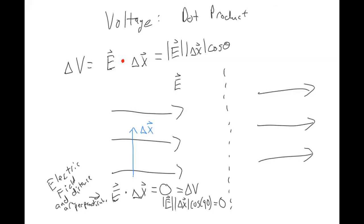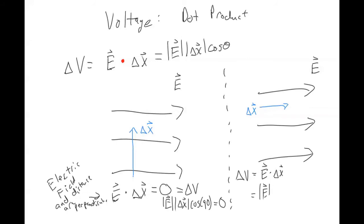Now for the other example, where the electric field and delta x are in the same direction: the change in voltage equals E dot delta x, which is magnitude of E times magnitude of delta x times cosine of zero. Cosine of zero equals one, so multiplying by one just leaves you with delta V equals electric field times delta x.